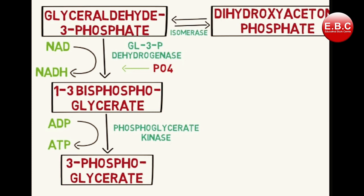In the next reaction, glyceraldehyde-3-phosphate is converted into 1,3-bisphosphoglycerate. This involves the addition of a phosphate group at the first position. The enzyme that catalyzes this reaction is glyceraldehyde-3-phosphate dehydrogenase. In this reaction, nicotinamide adenine dinucleotide (NAD), which is a coenzyme, is reduced to NADH, which is further utilized in the electron transport chain to produce more energy. This reaction also utilizes a molecule of inorganic phosphate.